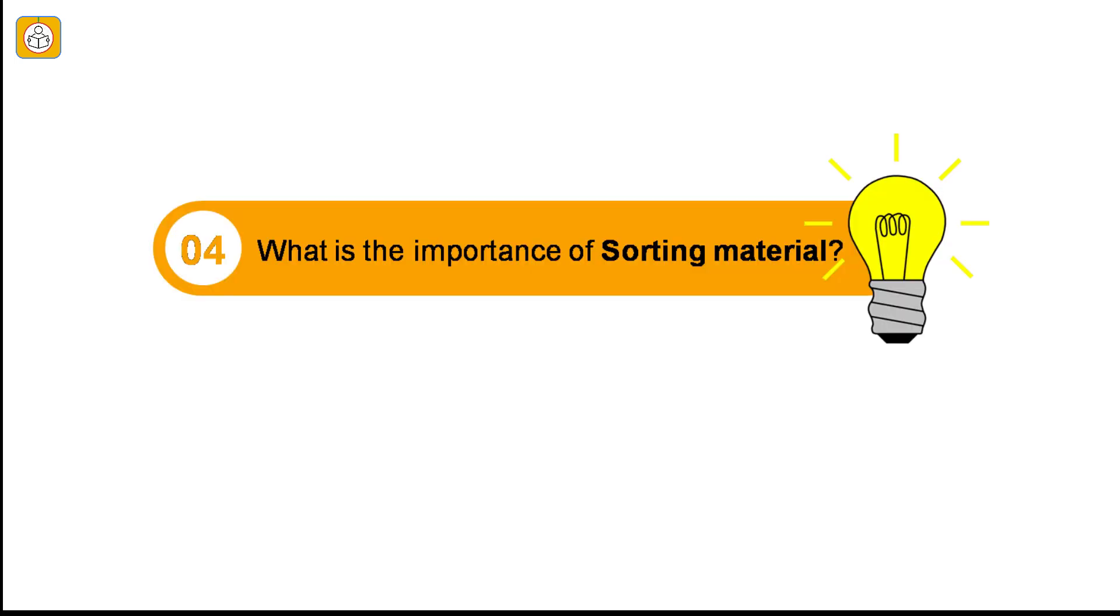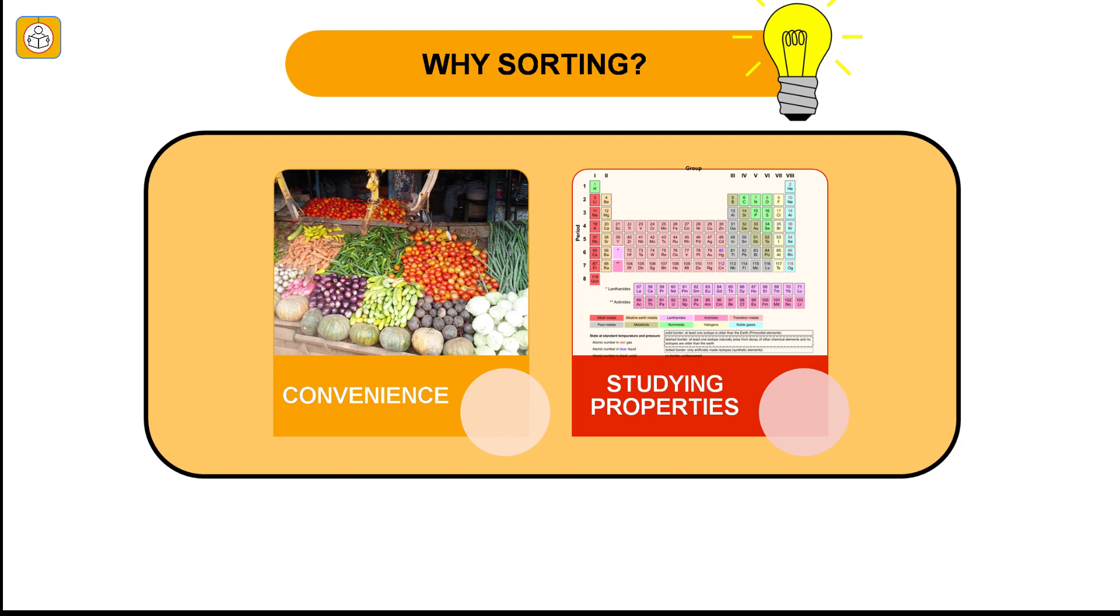Finally, coming to the last question. What is the importance of sorting material? There are two important reasons to sort objects. The first one is convenience. When similar objects are placed together, it helps us to locate them easily. For example, a vegetable vendor places the vegetables in groups as shown in the picture. This makes it convenient for both vendor and customers. The second important reason is it makes it easier to study. Dividing materials in groups makes it convenient to study their properties and also observe any patterns in their properties. For example, the periodic table which segregates metals, non-metals and other kinds of elements helps us to study them properly and to identify patterns.